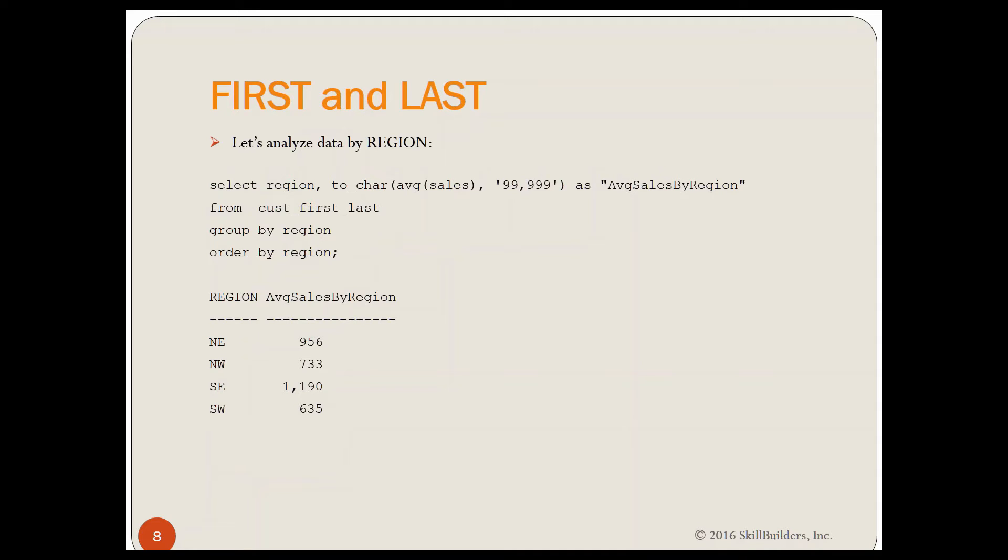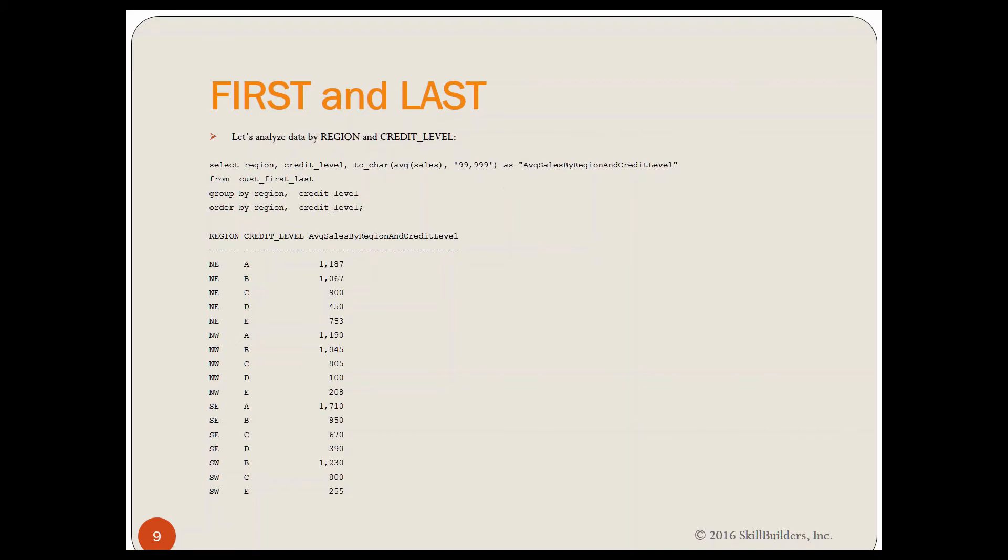I want this kind of information that displays it by region, one row for each region. But on the row for each region, I not only want to display the overall average for the region, but I want to display the average for the best, which is best customers, which is 11.87 for Northeast, and the worst, which is 7.53 for Northeast. Which for Northwest, it's 11.90, and the worst is 2.08.